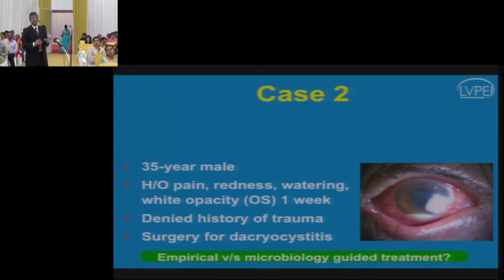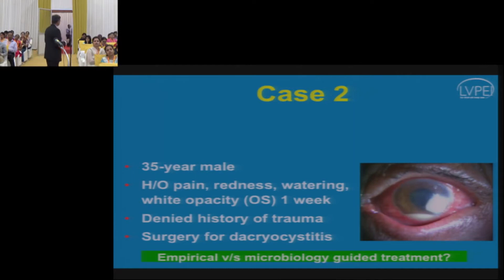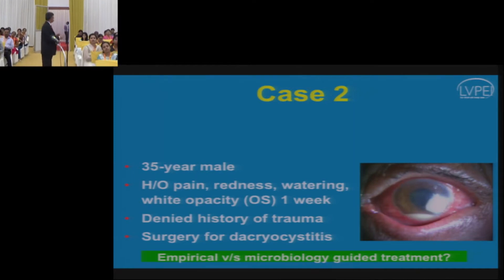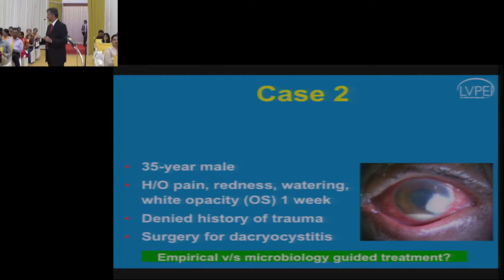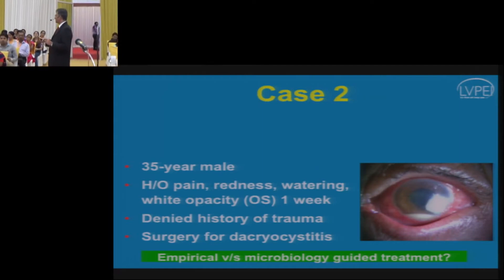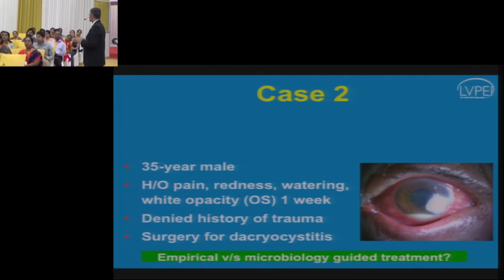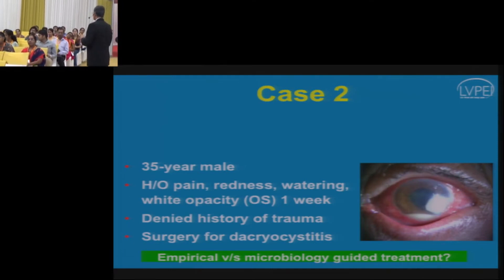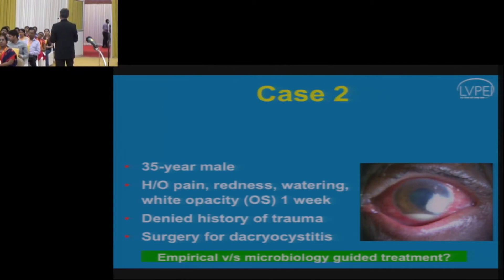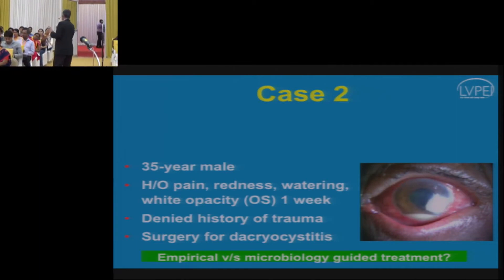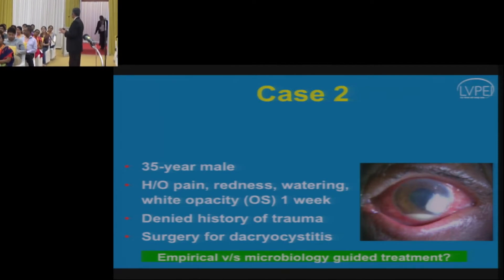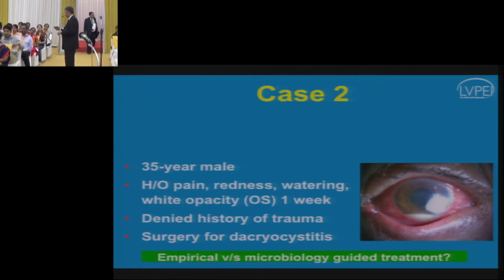Second scenario: a 35-year-old male presented with a painful red eye and denied any history of trauma, but had undergone dacryocystorhinostomy and then developed a corneal lesion. The question is: should you start antibiotics without knowing the cause of infection, or should you perform corneal scraping and detailed microbiology workup before starting treatment?